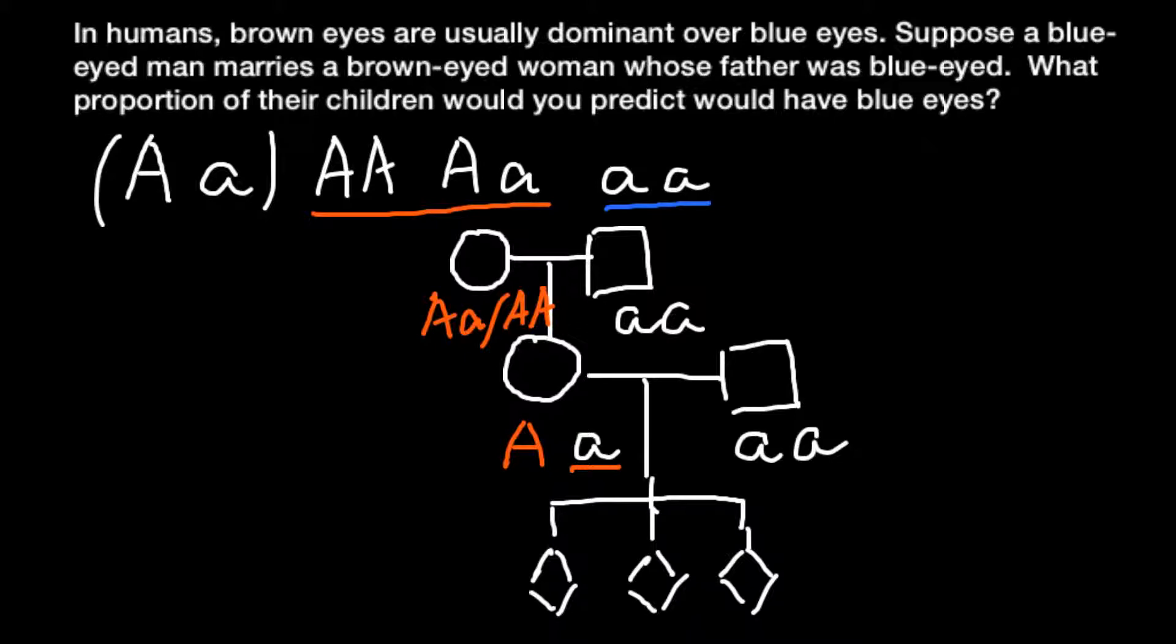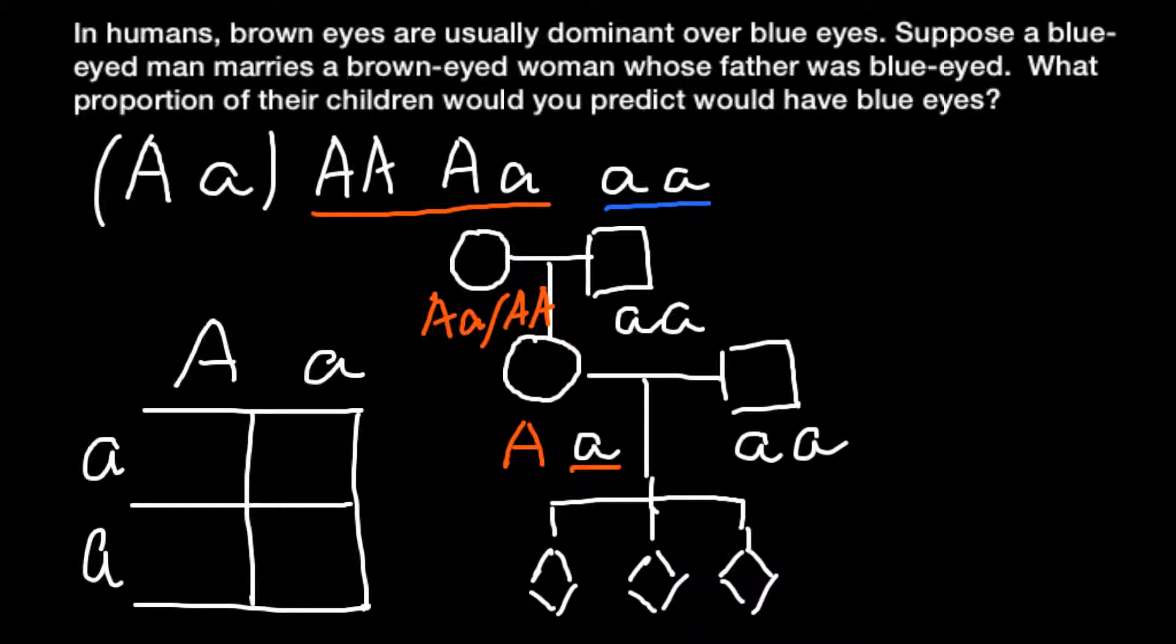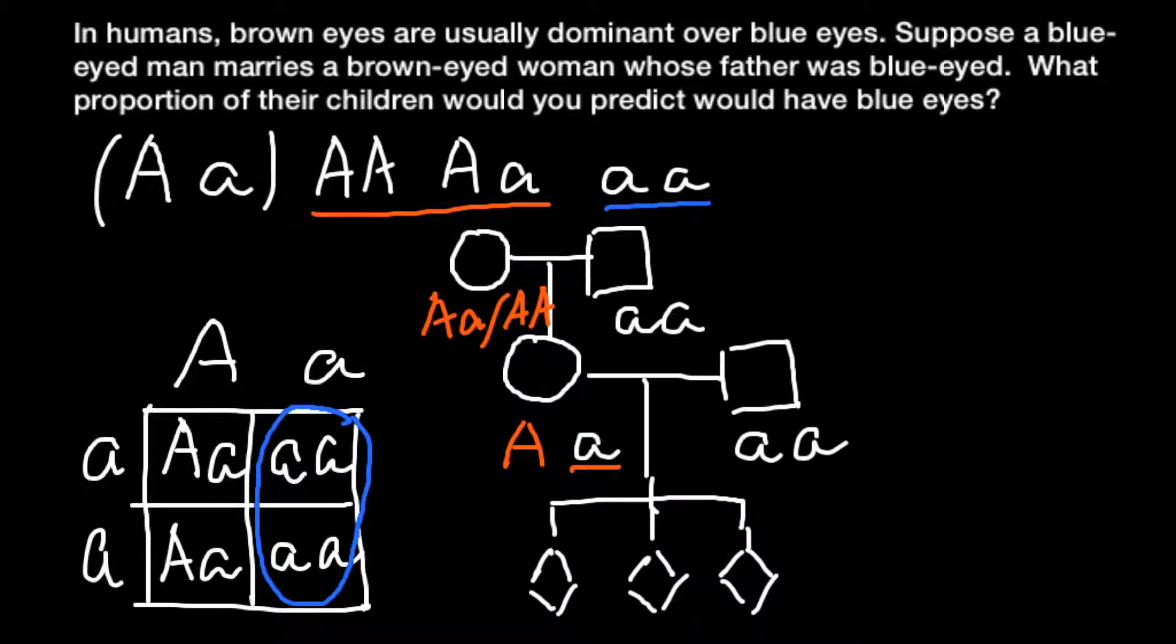So we have genotype for mother that is capital A and small a, and genotype of the father that is small a, small a. And when we build a Punnett square, we can find all the possible genotypes, phenotypes, and their frequencies. So here, capital A, small a, small a, small a here, capital A, small a here, and small a, small a here. As you see, this genotype means blue-eyed phenotype, and this genotype here means brown eyes. And as you see, the probability for this couple to have children with blue eyes would be 50%, and this is going to be our answer today.